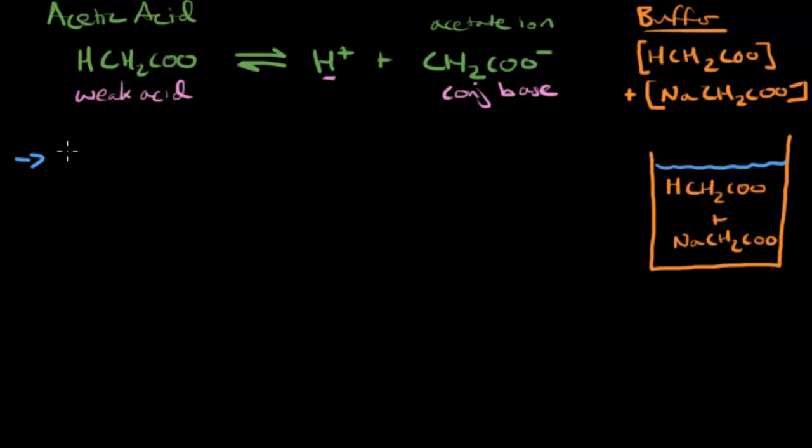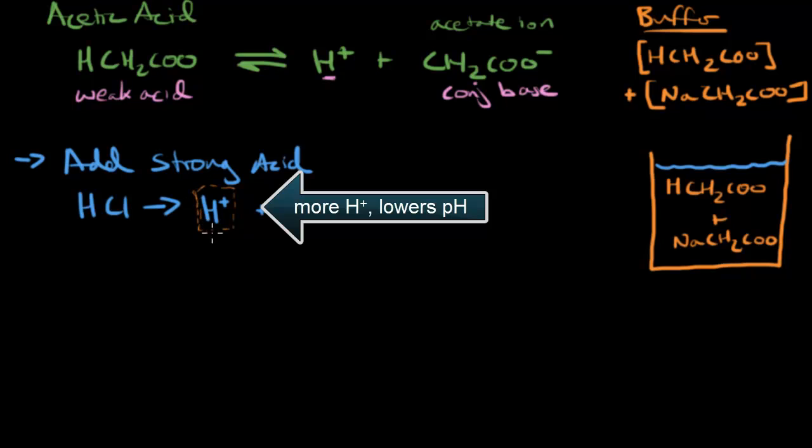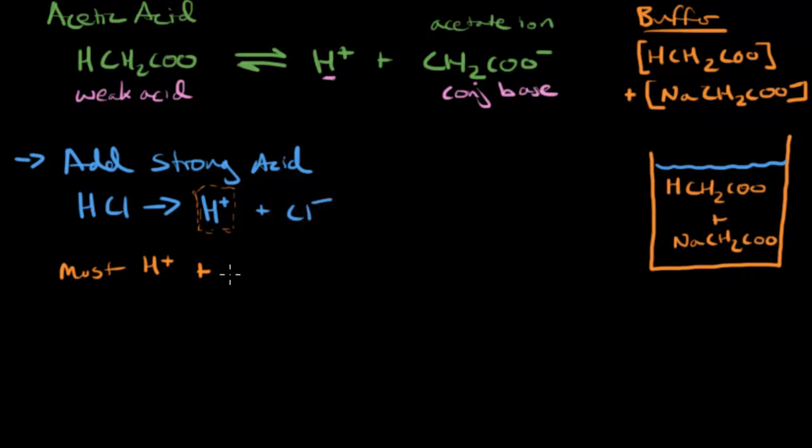So let's start by looking at what happens when I add a strong acid. I'm going to choose hydrochloric acid as my strong acid. And I know that hydrochloric acid fully dissociates into H plus and Cl minus. It completely dissociates because it's a strong acid, and that's the definition. So by adding hydrochloric acid, what I'm really saying is that I'm adding hydrogen ions, or protons. Most of these H pluses, most of the H plus ions, will react with the acetate ion that's present and form the acetic acid.